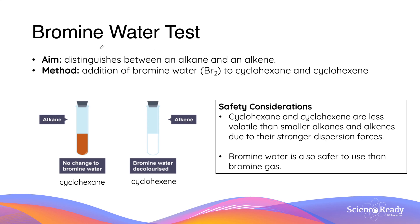The bromine water test is a very simple but useful chemical test that helps you distinguish between an alkane molecule and an alkene molecule. At school, you will typically be conducting this experiment to compare cyclohexane and cyclohexene. The method is to add bromine water, which has the chemical formula Br₂, to these two types of hydrocarbons. Cyclohexane is an alkane and cyclohexene is an alkene.